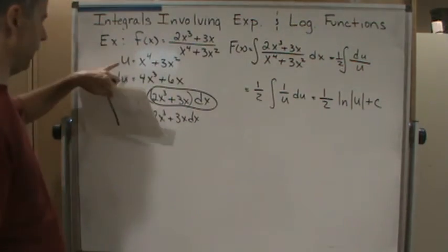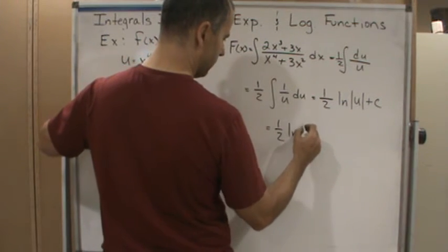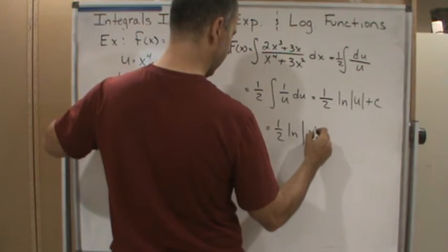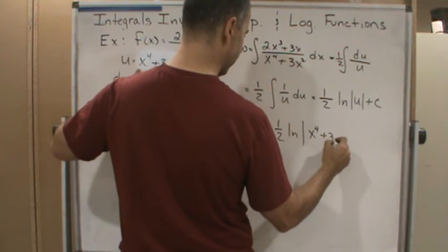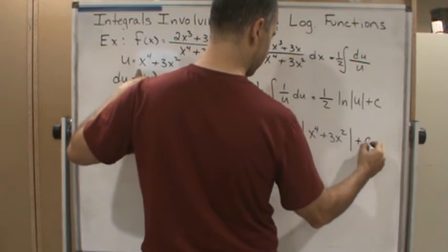And of course now I'm going to put in my u, so this becomes 1 half times the natural log of the absolute value of x to the fourth plus 3x squared plus c.